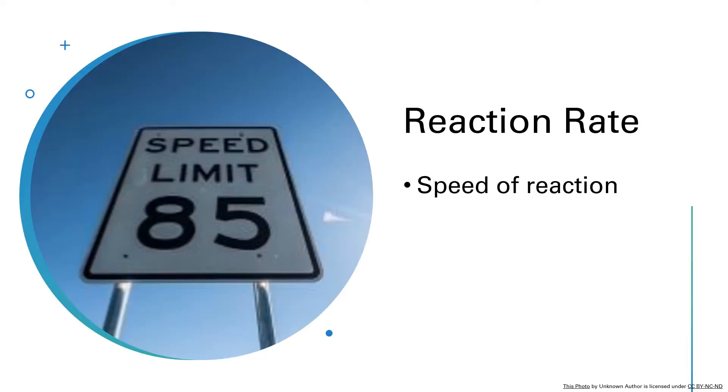The reaction rate is the same thing as the speed of a reaction, for something that's a little bit more familiar. Think about the speed limit on a road. The speed limit tells you the fastest you can drive on that road and not get a ticket. For instance, in this sign, it's telling us that the speed limit is 85. That's in terms of miles per hour. So it's a distance traveled divided by the amount of time it takes to do it. So the speed is miles per hour.